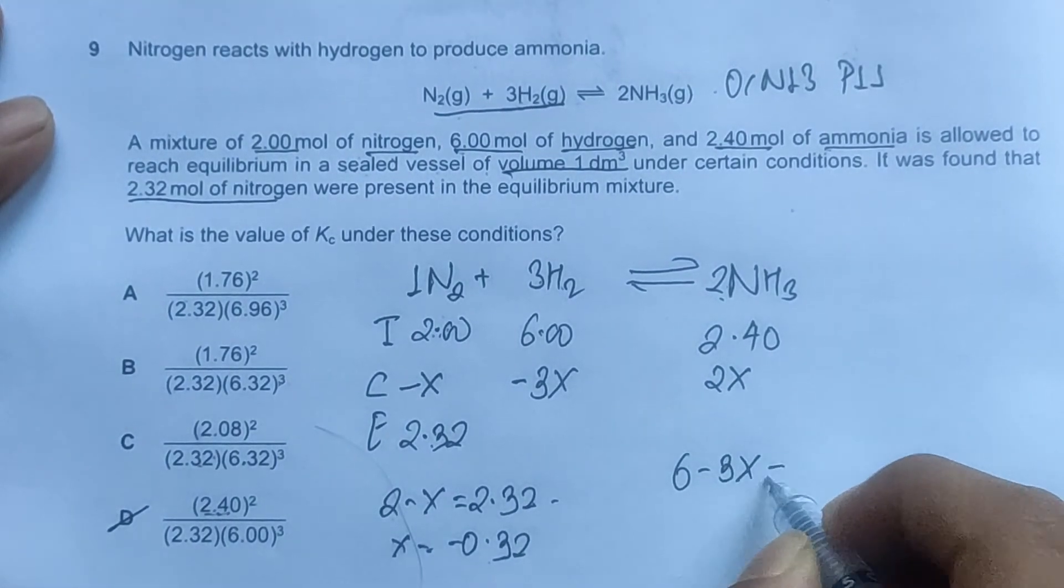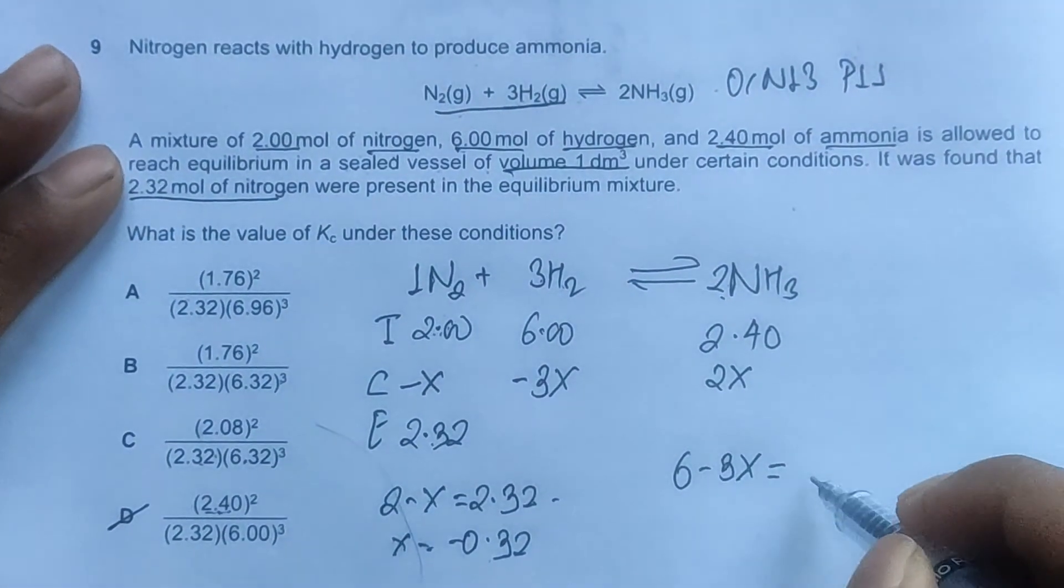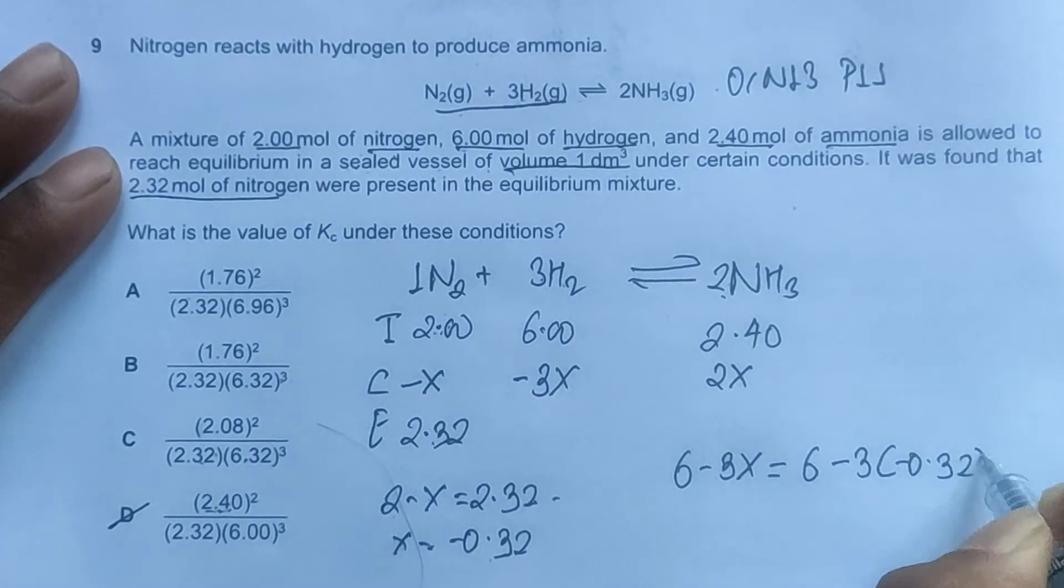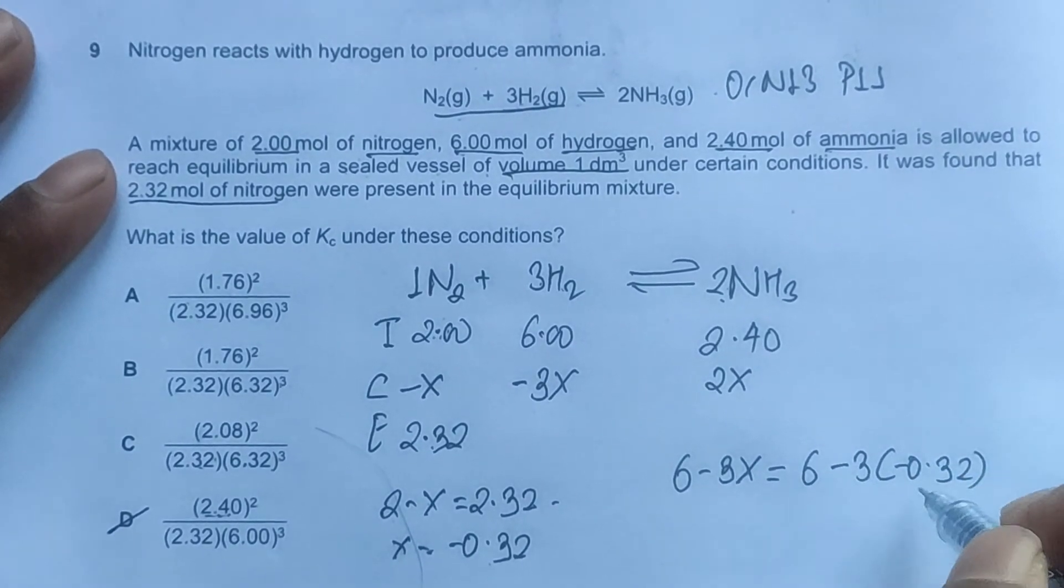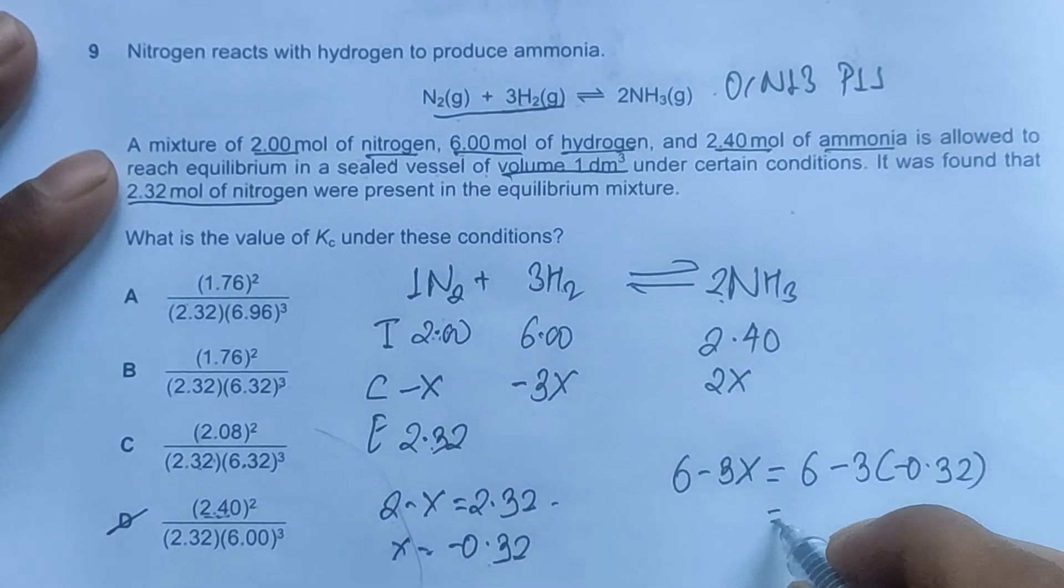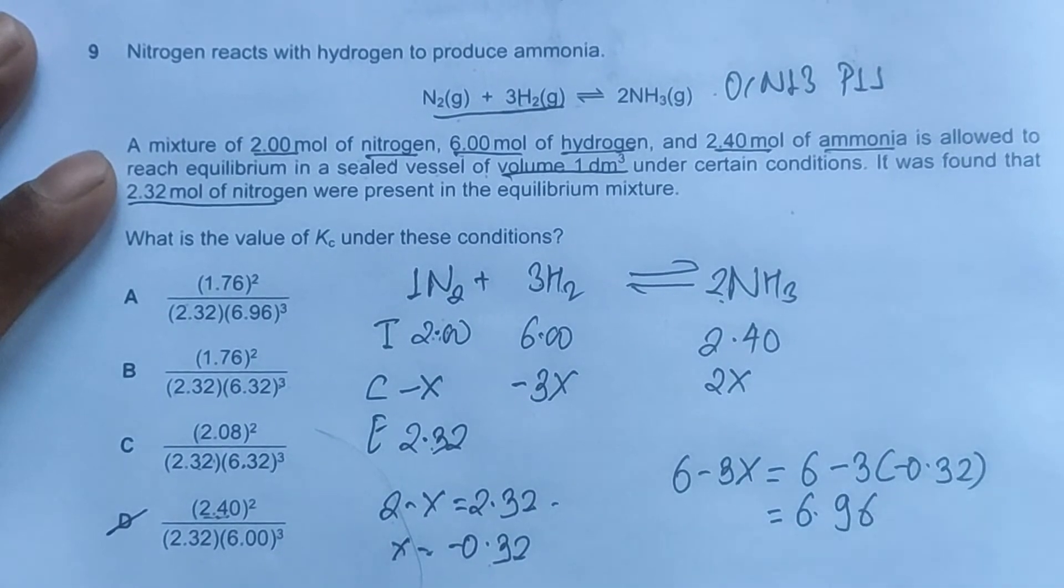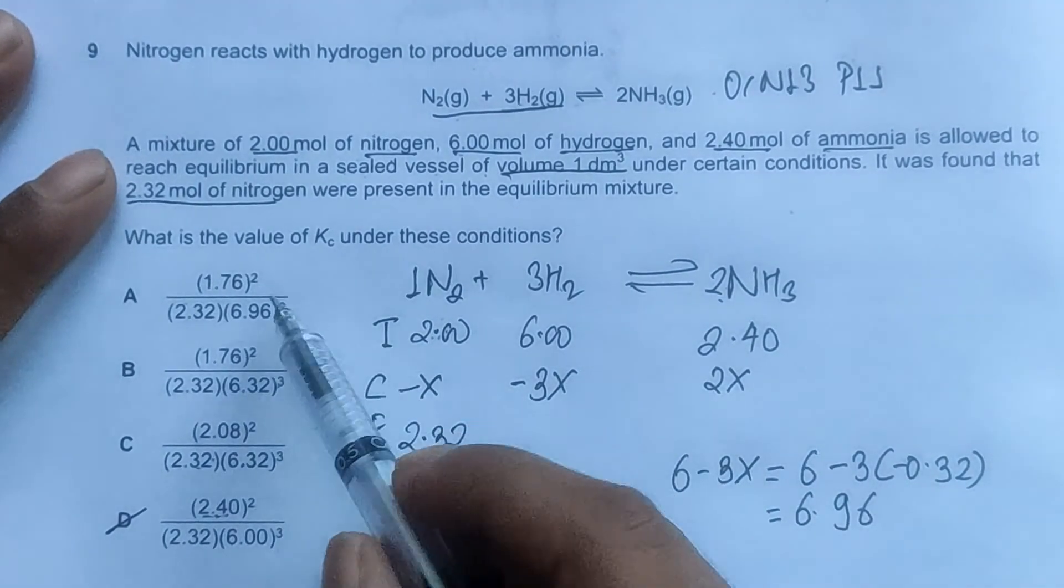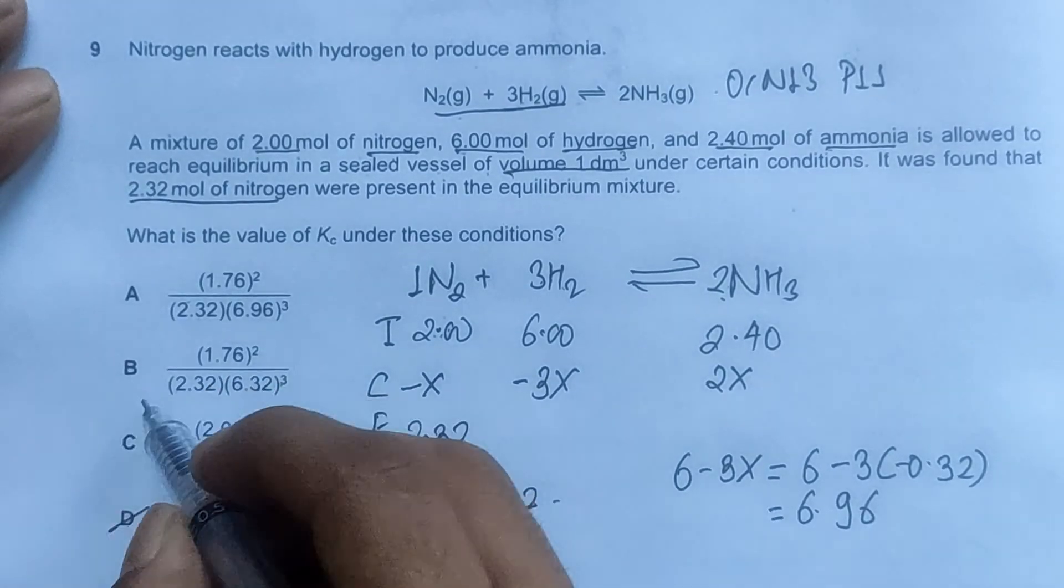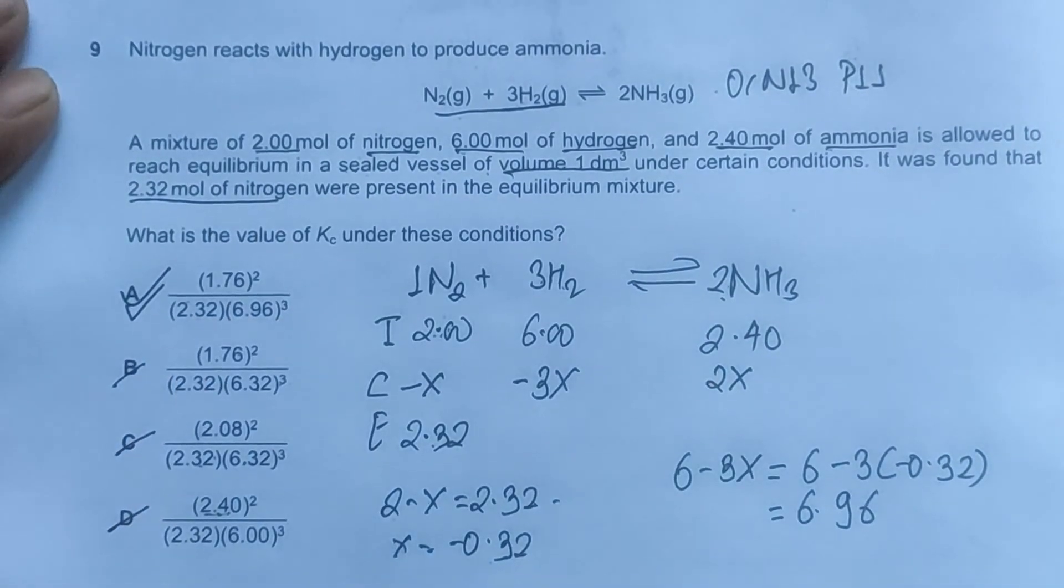Figuring out the moles of hydrogen: we have 6 minus 3X equals 6 minus 3 times minus 0.32. This will be plus 3 multiplied by 0.32, so 6 plus 0.96. So 6 plus 0.96 is 6.96. Moles of hydrogen is 6.96.